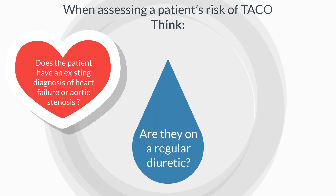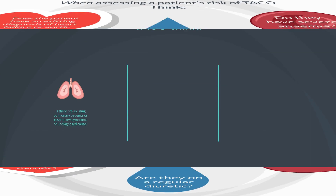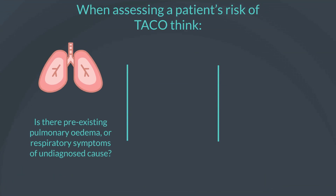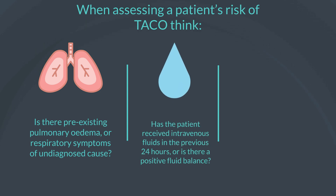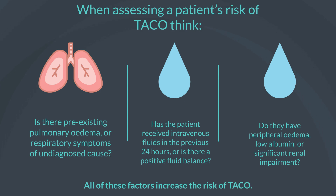Are they on a regular diuretic? Do they have severe anaemia? Is there pre-existing pulmonary oedema or respiratory symptoms of undiagnosed cause? Has the patient received intravenous fluids in the previous 24 hours, or is there a positive fluid balance? Do they have peripheral oedema, low albumin, or significant renal impairment? All of these factors increase the risk of TACO.